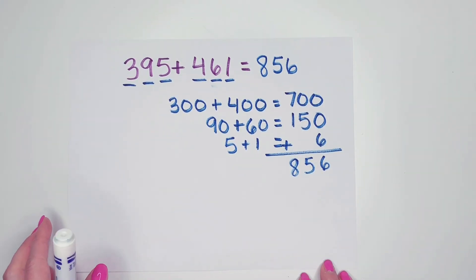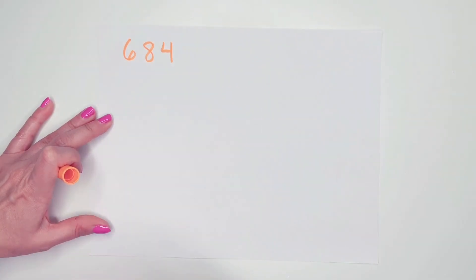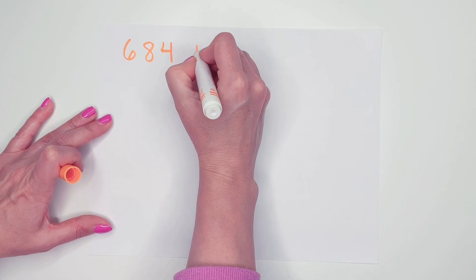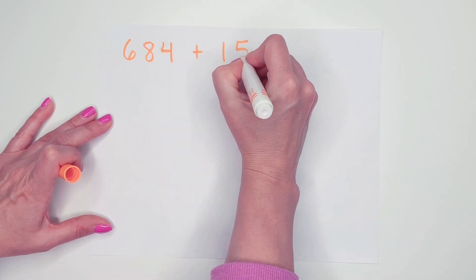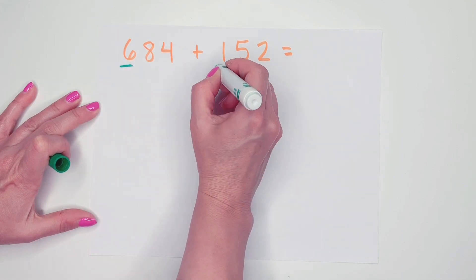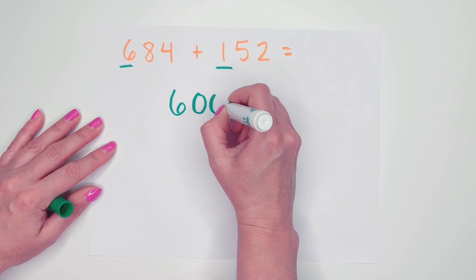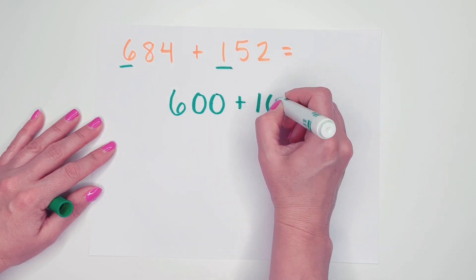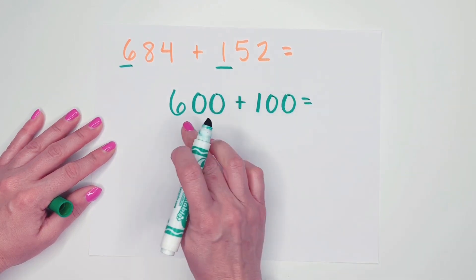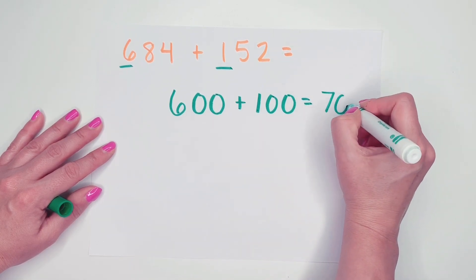Let's try another one. 684 plus 152. Do you remember what to do first? We're going to look at our hundreds and add our hundreds together. 600 plus 100. Well, I know 6 plus 1 is 7. So 600 plus 100 must be 700.